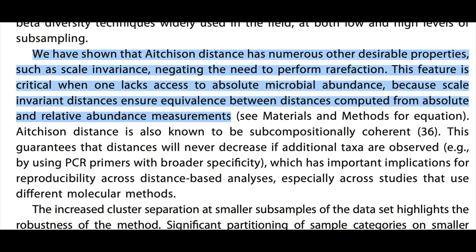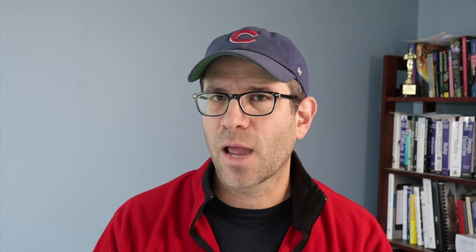One of the things I've noticed is that proponents make the claim that CLR approaches are scale invariant and subcompositionally coherent, and that therefore there is no need for rarefying the data to deal with uneven sampling effort. I have my suspicions that that's not quite true, but we have a great tool in R that we can use to test this out. Along the way we'll run into a couple of problems and see how those solutions may or may not affect whether Aitchison distances are truly invariant to differences in sampling effort.